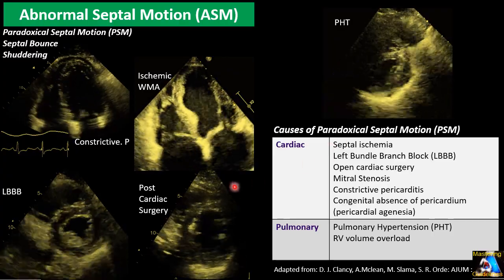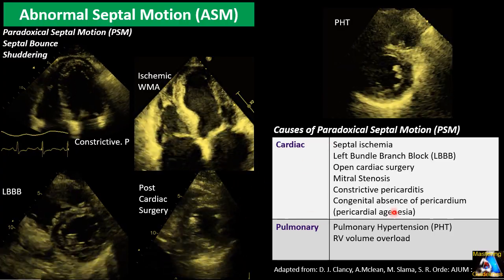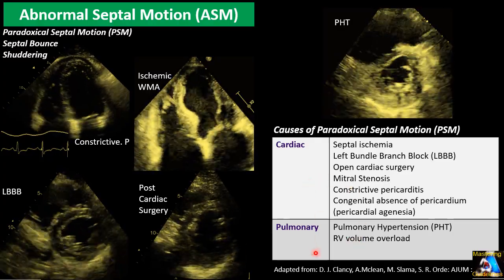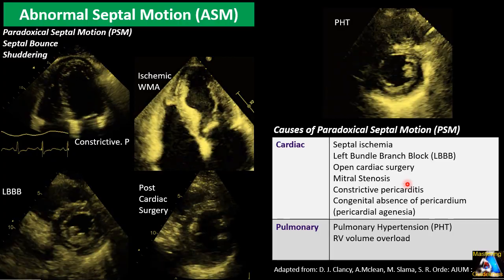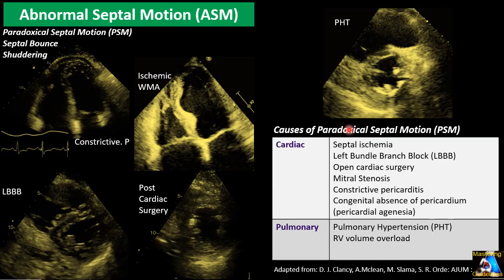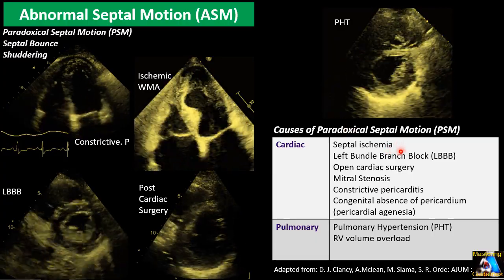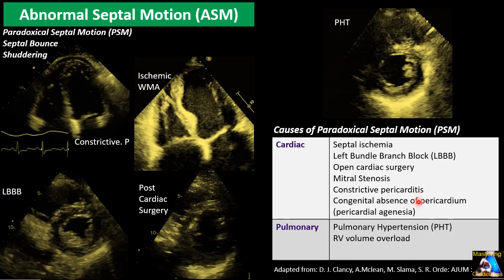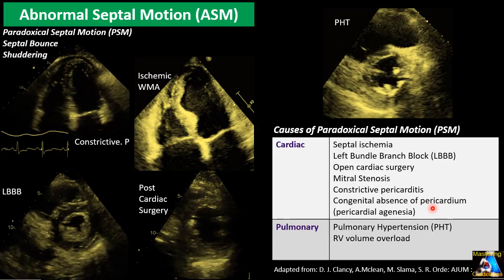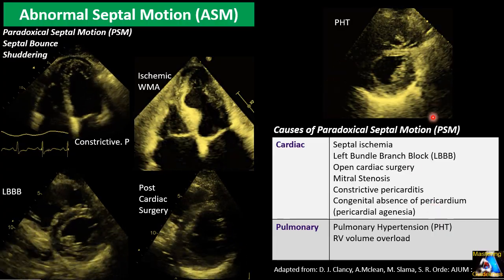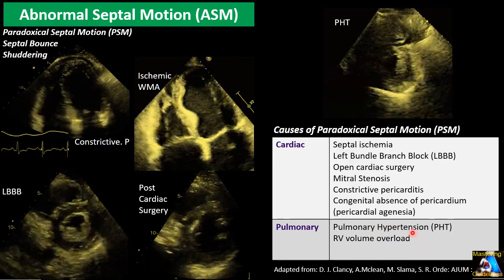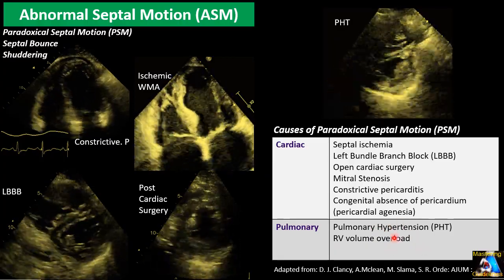The causes of abnormal septal motion can be divided into two groups: cardiac and pulmonary. In the cardiac group, the top cause is coronary artery disease (CAD), which can cause wall motion abnormality. Others include left bundle branch block, open heart surgery, mitral stenosis, constrictive pericarditis, and agenesis of the pericardium. The pulmonary cause is due to pressure or volume overload of the right ventricle.